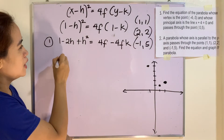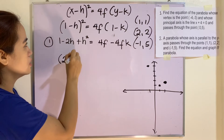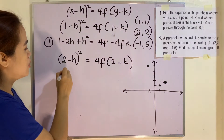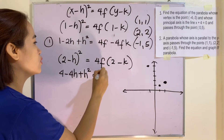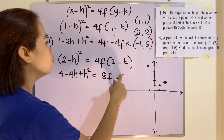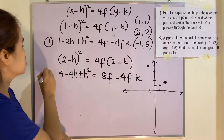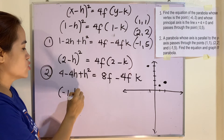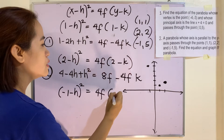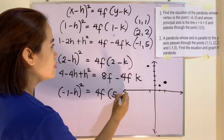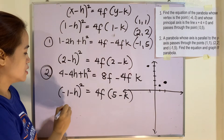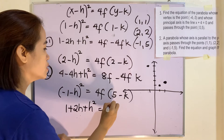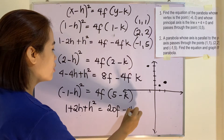Equation 2 uses the second point (2, 2): (2 - h)² = 4f(2 - k), which expands to 4 - 4h + h² = 8f - 4fk. Equation 3 uses the third point (-1, 5): (-1 - h)² = 4f(5 - k), which expands to 1 + 2h + h² = 20f - 4fk.